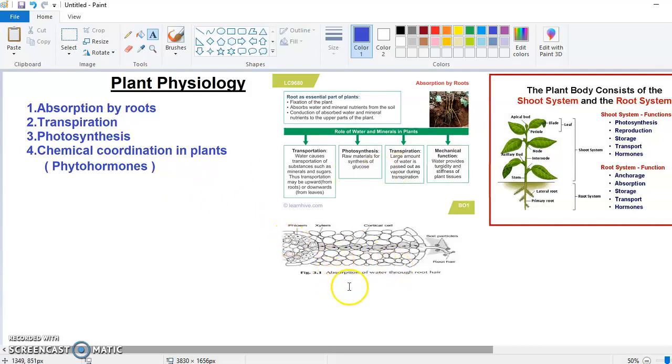I have taken a small picture showing how to absorb water through root hair. You can see in this picture, this is root hair, these are the soil particles, and these are all the cortical cells. This is the path where the soil particles absorb water. We'll discuss water transportation through xylem and food transportation through phloem. Xylem and phloem are the vascular transport system for plants.